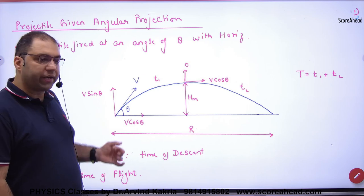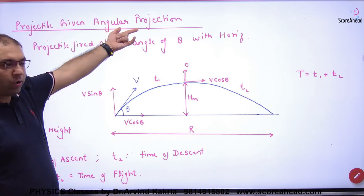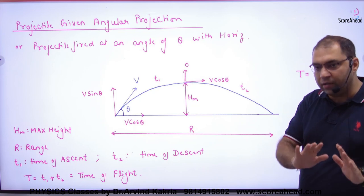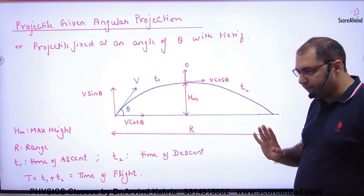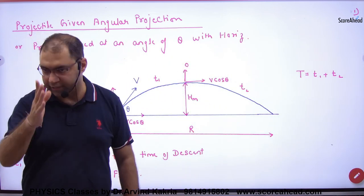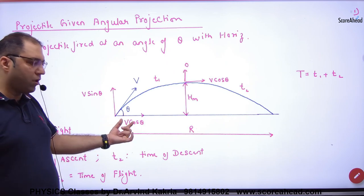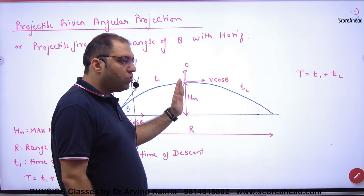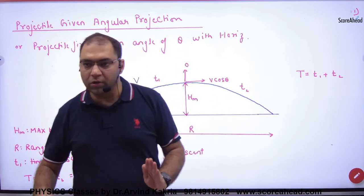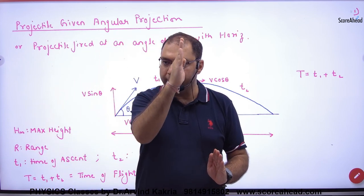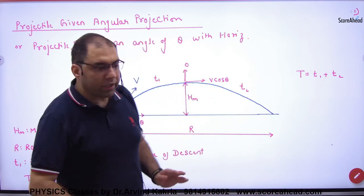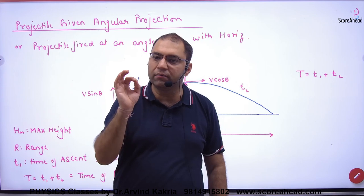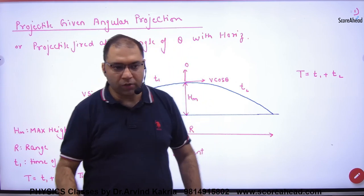So in this we have thrown a projectile at an angle — this topic is called angular projection. Now what is important to note: when the projectile is launched, V is the initial velocity. It has two components: V cos theta and V sin theta. The projectile attains height, and its height is maximized at the peak. After that the height starts to decrease — lower and lower. This maximum point is called the maximum height attained by the projectile.